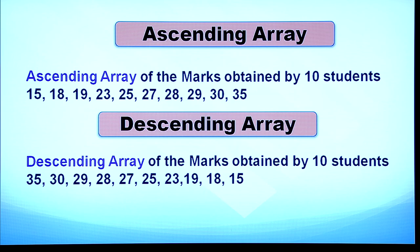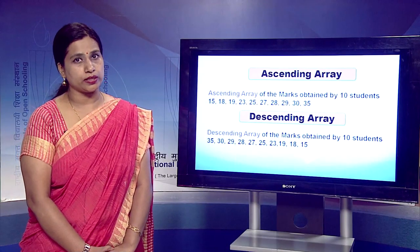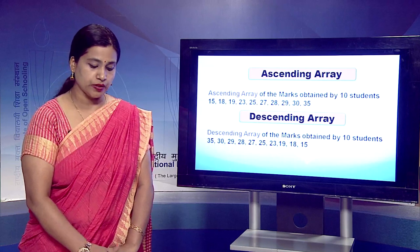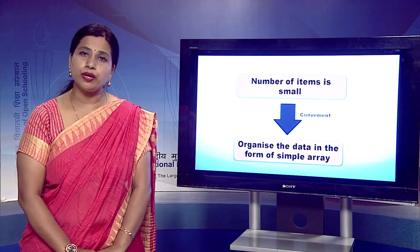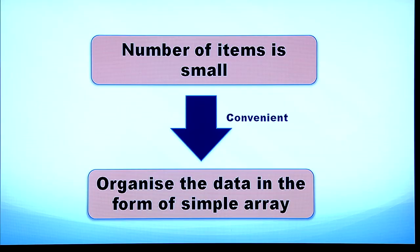So we have learnt that we can construct a simple array in two ways: either ascending or descending. We use a simple array when the number of items is too small, so we can easily arrange them. But when the number of items becomes large, we need to use a frequency array.